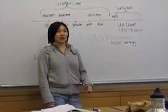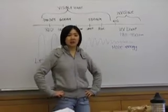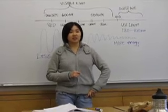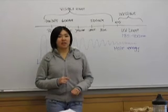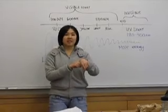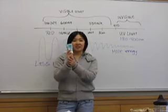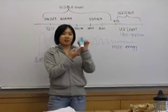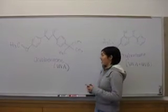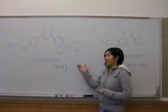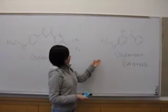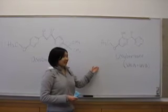UV light, which can be harmful to humans, comes from sunlight and can be divided into two categories: UVA, which is 290 to 320 nanometers, and UVB, which is 320 to 400 nanometers. UV radiation, which can be bad for human skin, can be protected against by sunscreen. Sunscreen contains conjugated pi structures — it contains avobenzone, which absorbs UVA radiation, and also oxybenzone, which absorbs both UVA and UVB radiation.